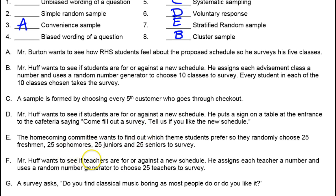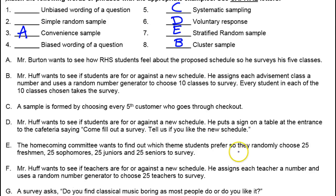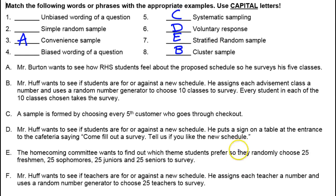F — Mr. Huff wants to see if teachers are for or against a new schedule, so he assigns each teacher a number and uses a random number generator to choose 25 teachers to survey. Which method is that? That's your simple random. So F goes here.